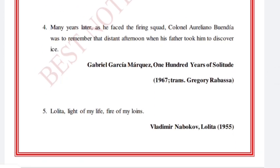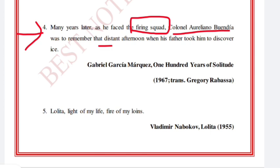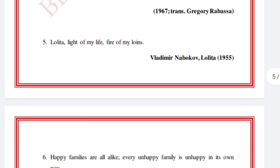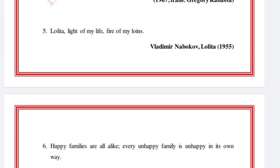'Many years later, as he faced the firing squad, Colonel Aureliano remembered that distant afternoon when his father took him to discover ice.' The key words here are 'firing squad' and 'ice'. This is Gabriel García Márquez, One Hundred Years of Solitude, 1967.